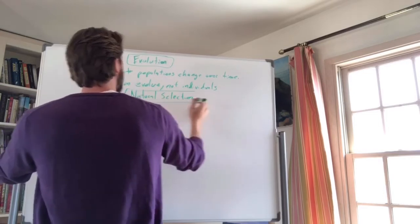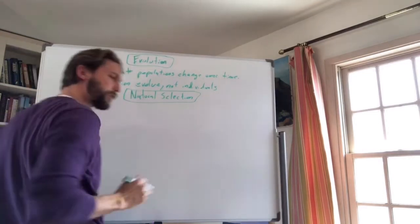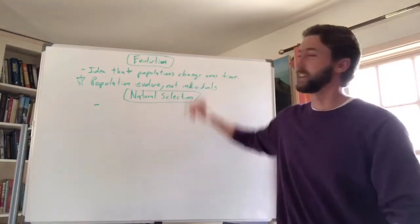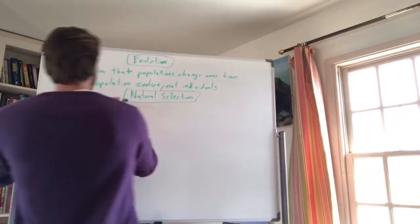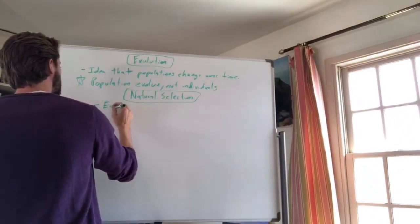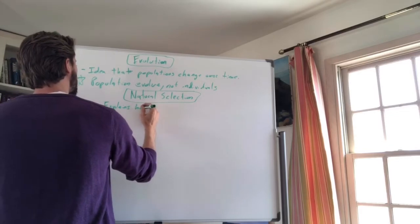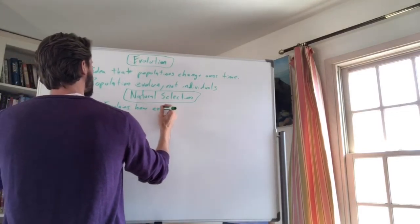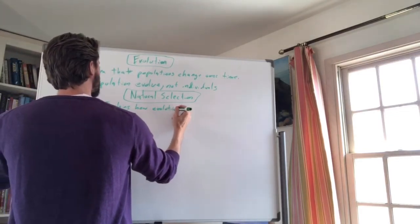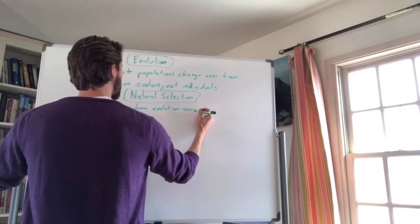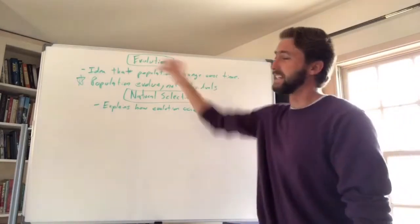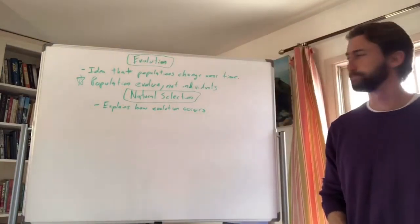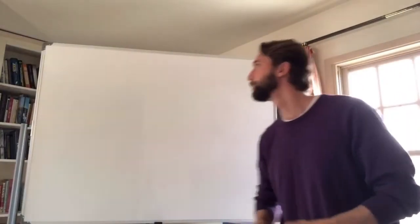So let's talk about natural selection. Natural selection is the 'how' — it explains how evolution occurs. It's the mechanism that drives it forward and causes speciation. So natural selection explains how evolution occurs, while evolution is the idea that populations change over time.